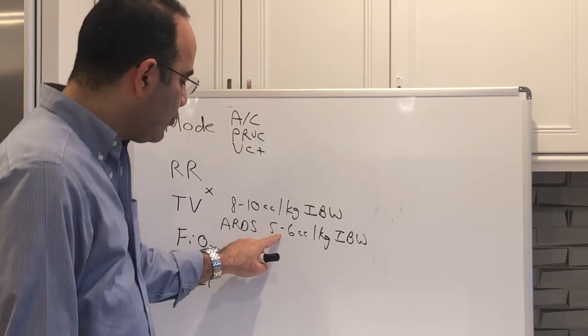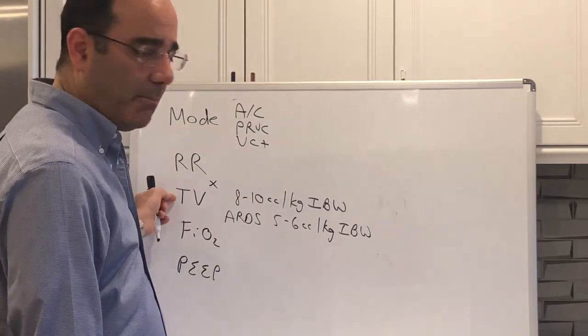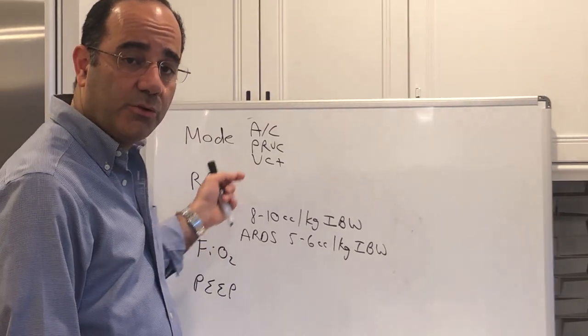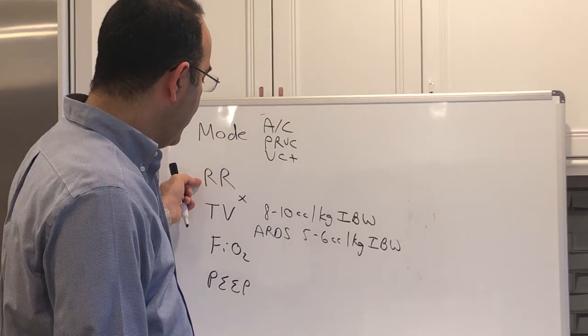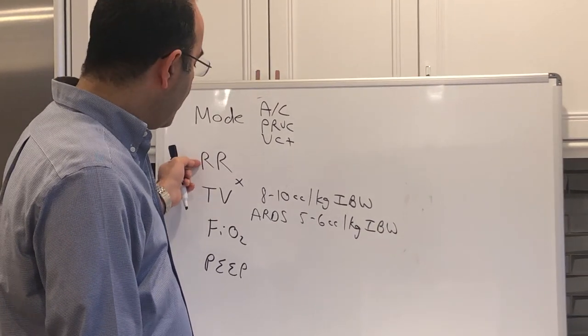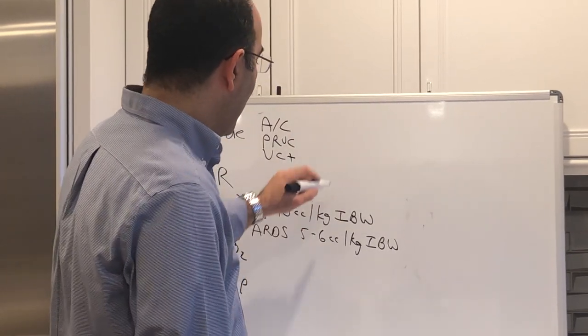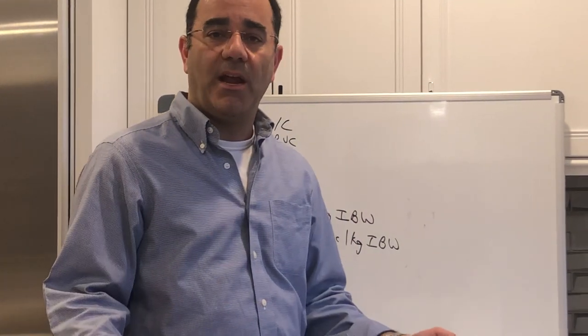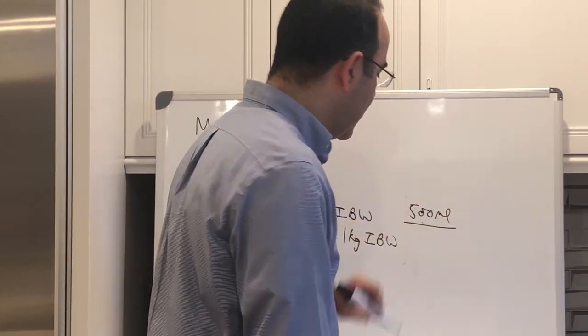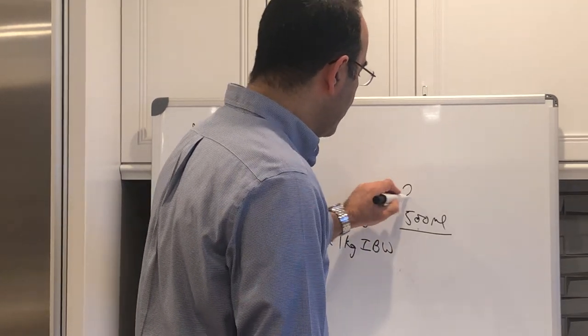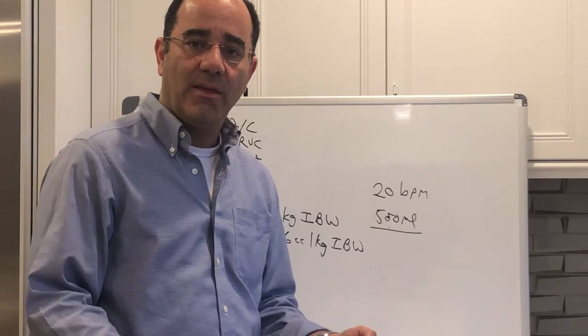As you drop the tidal volume from 8 cc's per kilo to 5 cc's per kilo, you are dropping minute ventilation. As you drop minute ventilation, pCO2 starts to rise and pH goes down. So you may need to defend that respiratory acidosis by going up on the respiratory rate to offset the decrease in the tidal volume. I wanted to give my friend a minute ventilation of 10 liters per minute. If he or she is getting 500 milliliter breaths, to make it 10 liters per minute, the respiratory rate must be 20 breaths per minute.